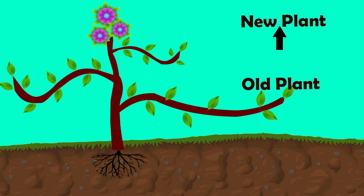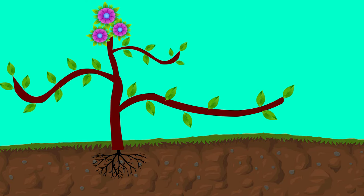Layering is an easy way to start new plants from old ones. The principle of layering is to encourage development of new roots on a stem while the stem is still attached to the parent plant.